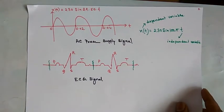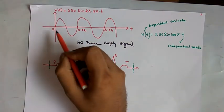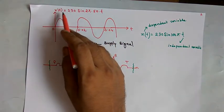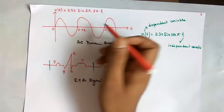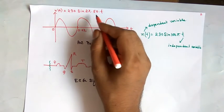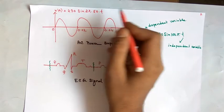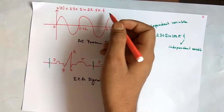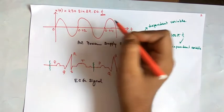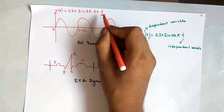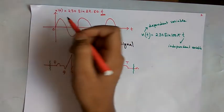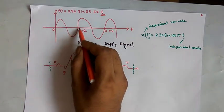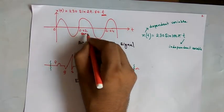Now we will see some examples of continuous signals. The first is a sinusoidal signal expressed as x(t) = 230 sin(2πft), where f is the frequency at 50 Hz — the power supply signal frequency in India. In Western countries it is 60 Hz. The amplitude is 230, t is the only independent variable making it a one-dimensional signal, and x(t) is a continuous time signal starting from zero.